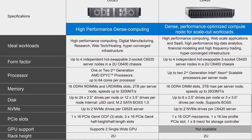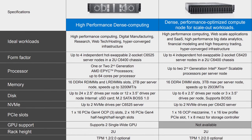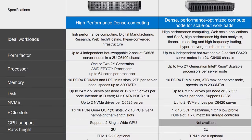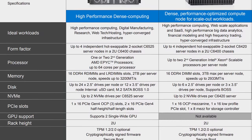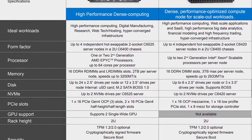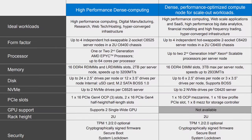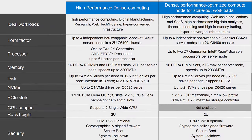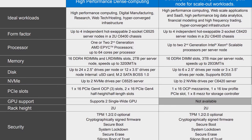Drawing a quick comparison: when we look at the PowerEdge C6420 Intel Xeon nodes, they also only support eight DIMMs per socket. But on the Intel Xeon side, you only get six-channel memory until we get to Ice Lake.